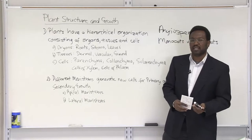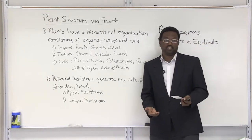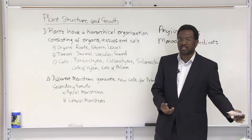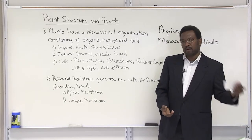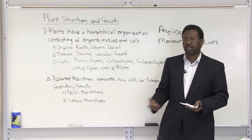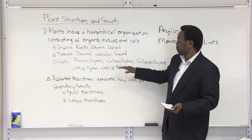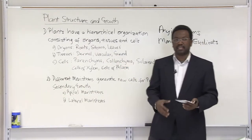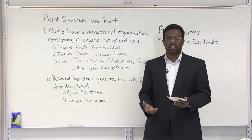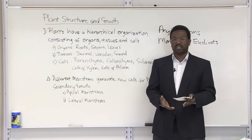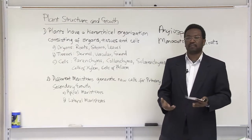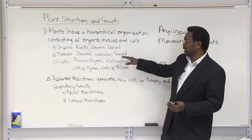We've got vascular tissue, which is the transportation tissue — the transportation vessels within the plant. This is what enables plants to transition from water existence onto land as terrestrial plants, developing their own vascular tissue to transport nutrients throughout the plant. Then we've got ground tissue, which is the packing and supporting tissue — there to help support the structure of the plant, for storage, and for much of the plant's metabolic activity.